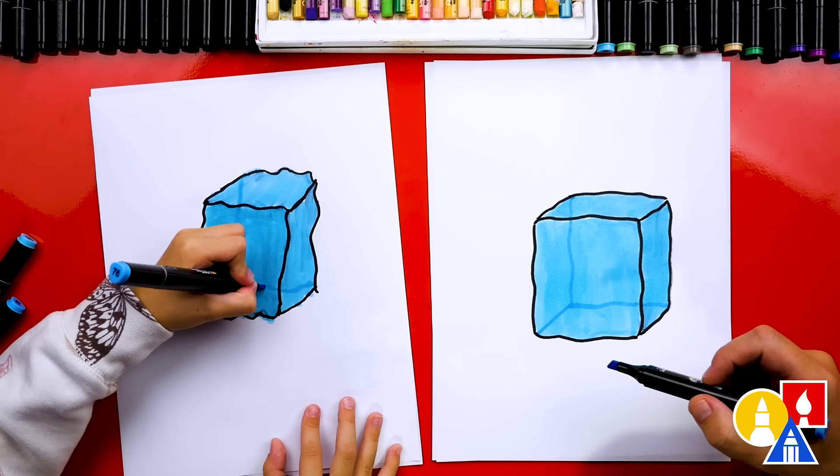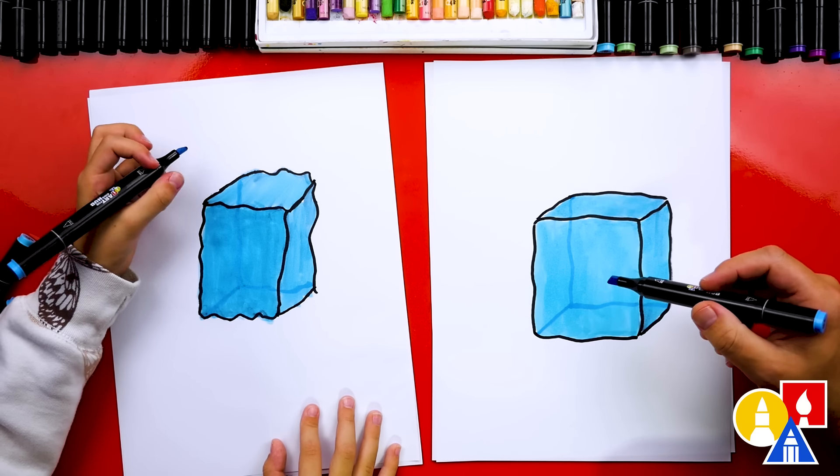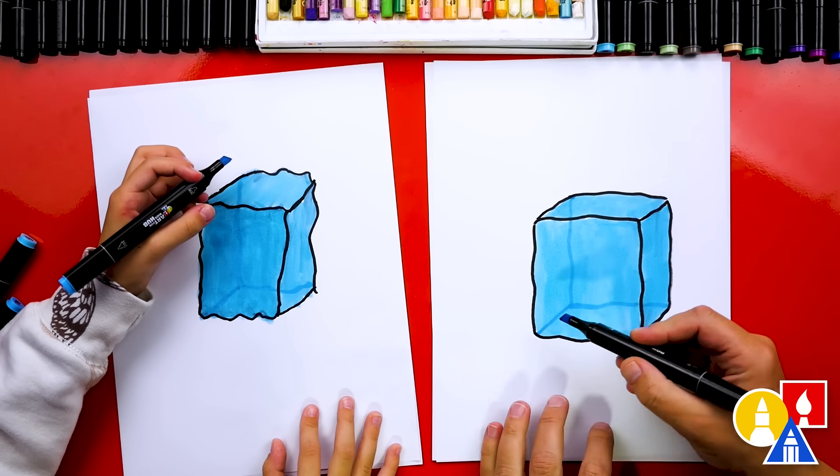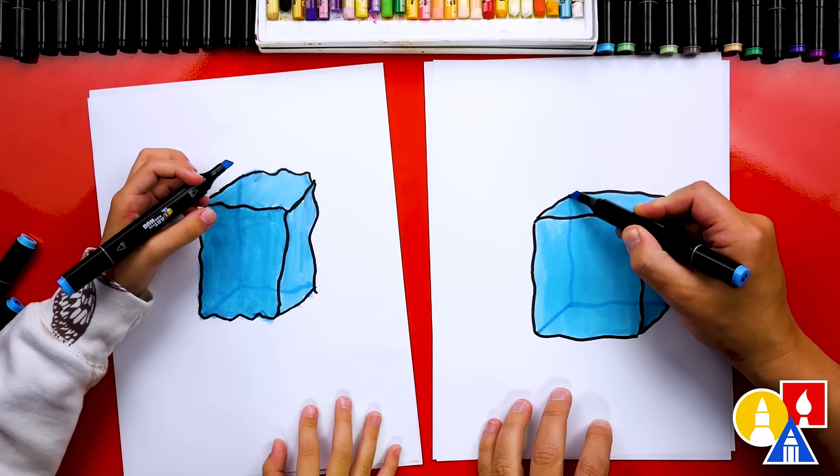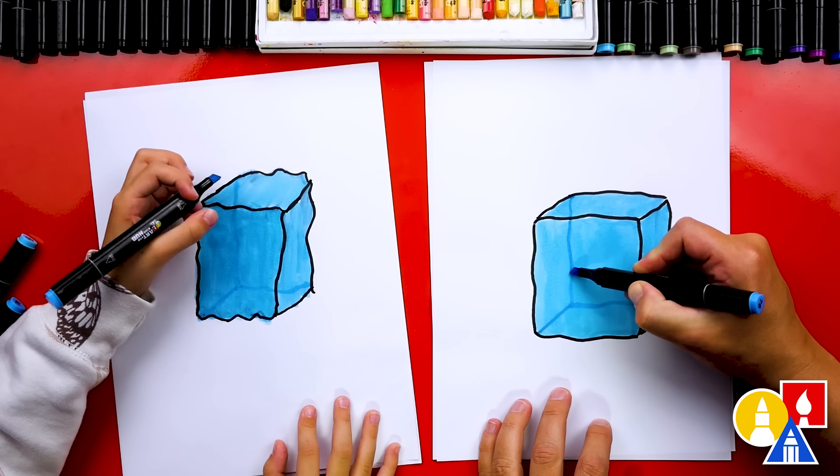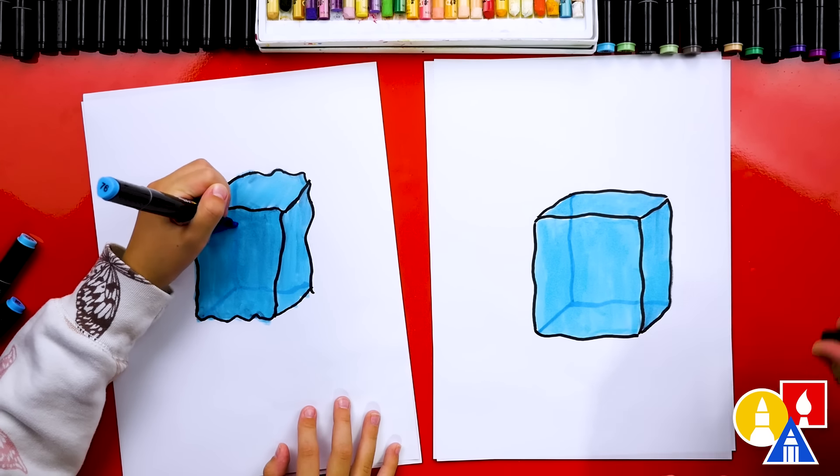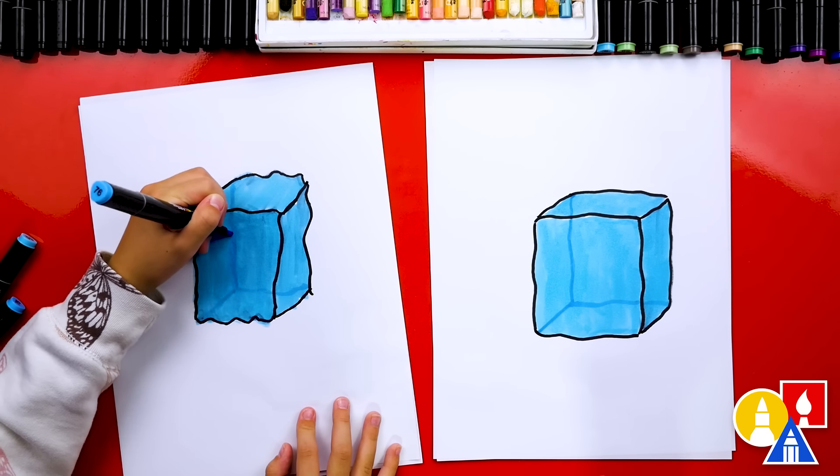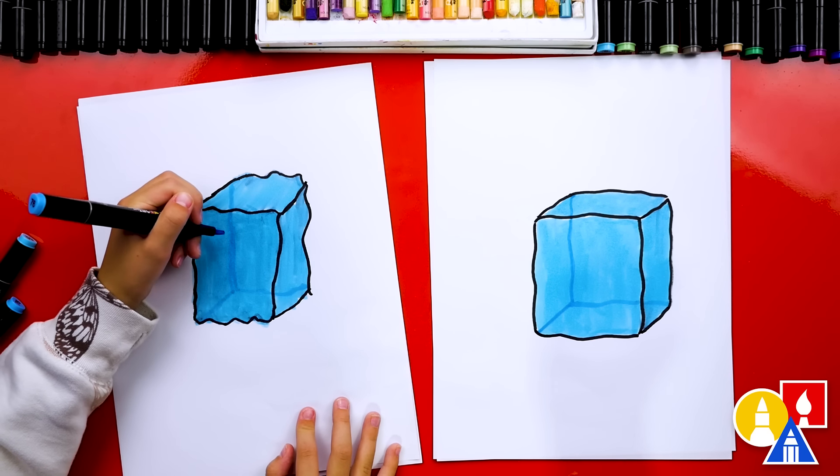Yeah. Right there. And connect to there. Look at that. Now it looks like our ice cube is transparent. Or you can see through it. Isn't that cool? Yeah. It's a little secret. And now we can see the other side of our cube. It looks really 3D. Oh, I like that you're making it even darker so you can see it.